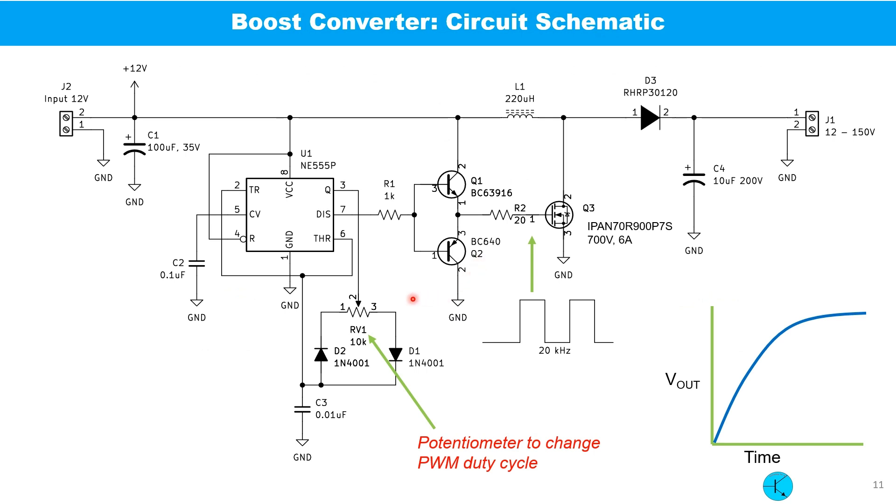This is the schematic diagram of the practical circuit that I tried. A 555 timer IC is used as a PWM pulse generator. Its frequency is set at 20 kHz with the capacitor C3 and the potentiometer RV1 whose value is 10 kOhm. As the potentiometer is varied, the duty cycle changes from minimum to the maximum. The two small transistors serve as a MOSFET gate driver. Very important selection should be done with these two components: the MOSFET Q3 and the diode D3. Both should be rated for higher than 200 volt as our output voltage is around 150 volt.